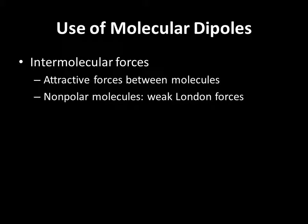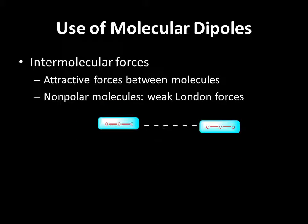When the bond dipoles all cancel out — that is, the molecular dipole moment is zero — then all you have are weak London forces, which are those instantaneous attractive forces that you get between molecules, caused by electrons sloshing around to create an instantaneous partial positive and partial negative charge, but no real permanent dipole interactions. These are very weak attractive forces, as seen in the case of CO2: mu is zero, it's nonpolar, and the molecules interact with each other very weakly through London forces — these instantaneous dipoles that form and break.